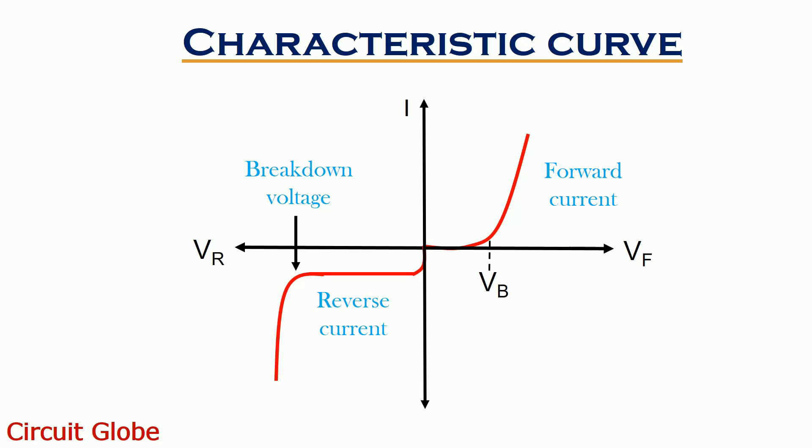Now, coming to the reverse characteristic of a diode. As we can see, a small reverse saturation current, also known as leakage current, flows for some range of reverse bias voltage. This current is basically due to the flow of minority carriers in the device.